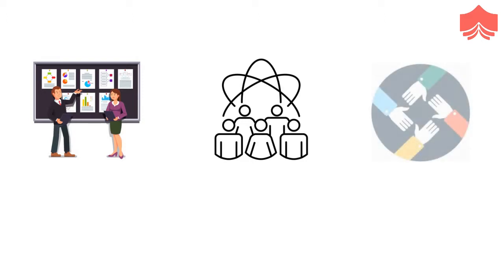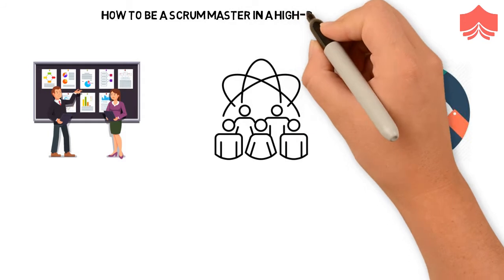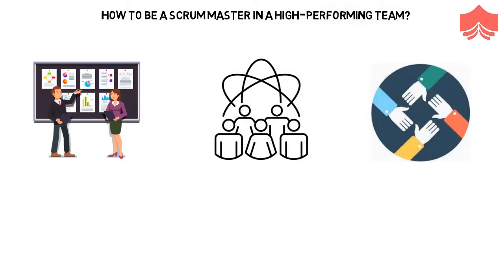Can a Scrum Master be of any help if the team is already aware of Agile values and principles, agrees to them and follows them properly? Such efficient teams are called High-Performing Teams. And in this video, we will be discussing how to be a Scrum Master in a High-Performing Team.